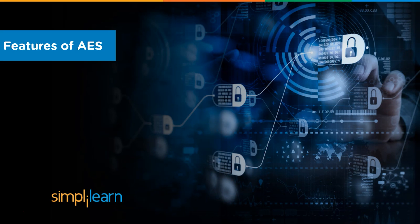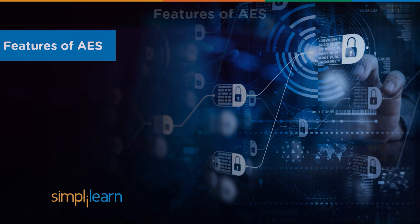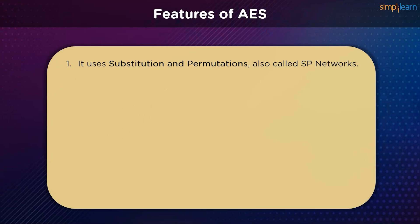Now that we understand the origin of AES, let's look at the features that make the AES encryption algorithm unique. The AES algorithm uses a substitution-permutation, or SP, network. It consists of multiple rounds to produce a ciphertext, with a series of linked operations including substitutions — replacing inputs with specific outputs — and permutations, which involve bit shuffling.